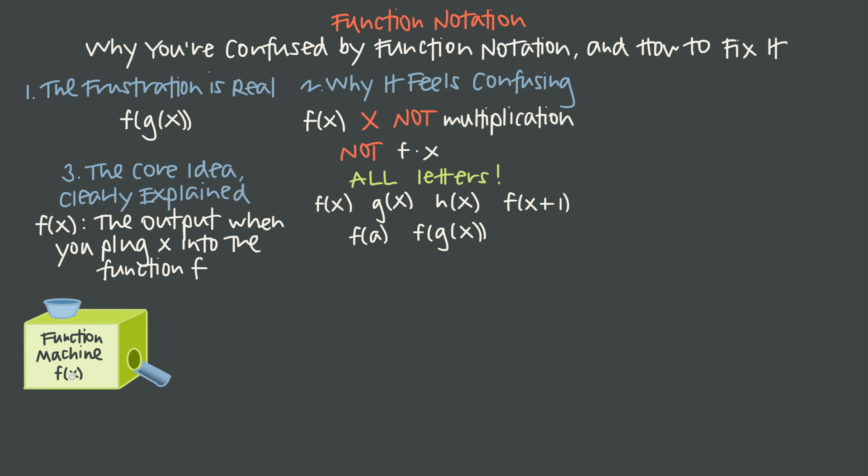So this particular machine represents what f does. We would have a different function machine for g of x and a different one for h of x. And if we had one for g of x, it would tell us what g does, and a function machine for h of x would tell us what h does.